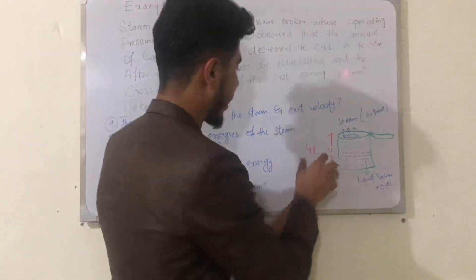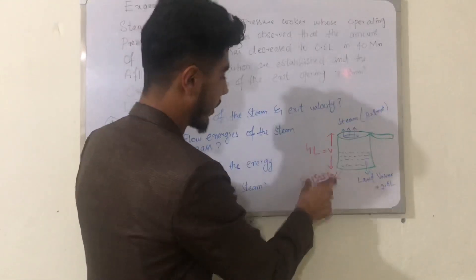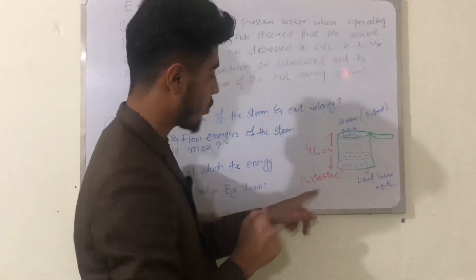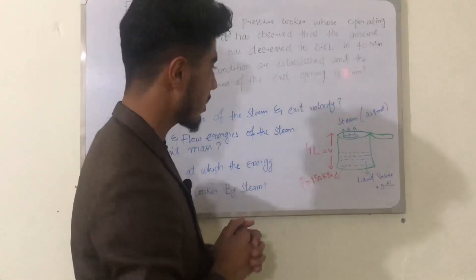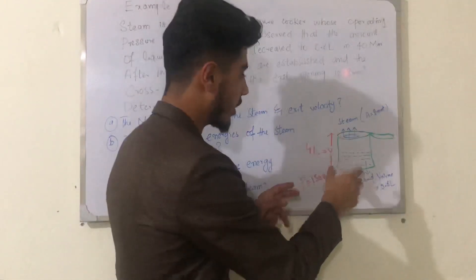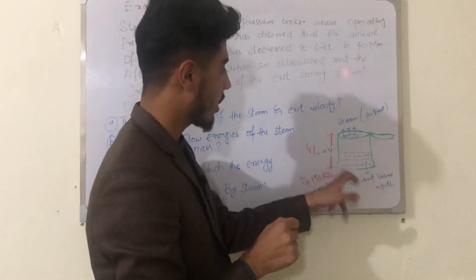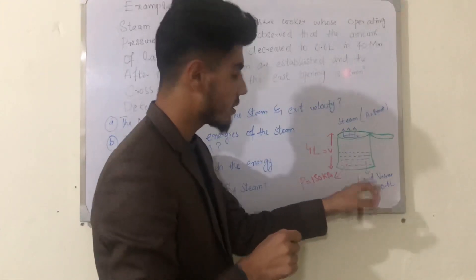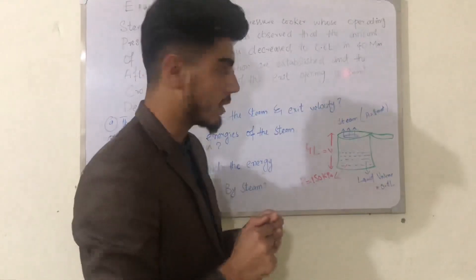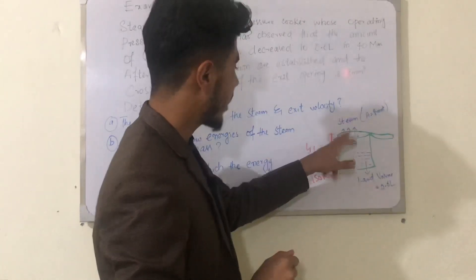Number two, the total and flow energy of the steam per unit mass. Number three, the rate at which energy leaves the cooker by steam. We have a cooker with total volume of 4 liters, operating at 150 kilopascal pressure, and liquid volume of 0.6 liter.